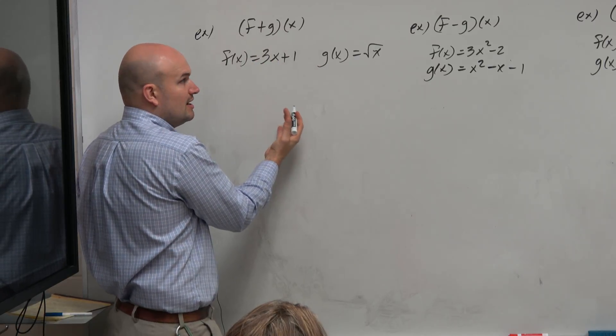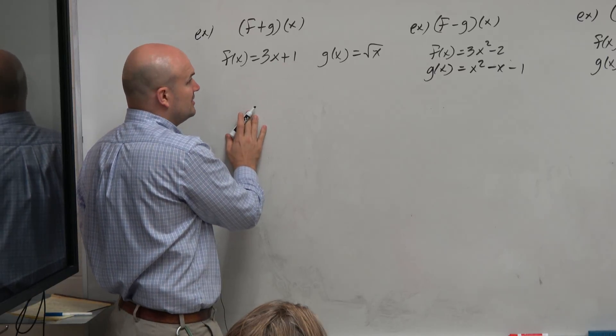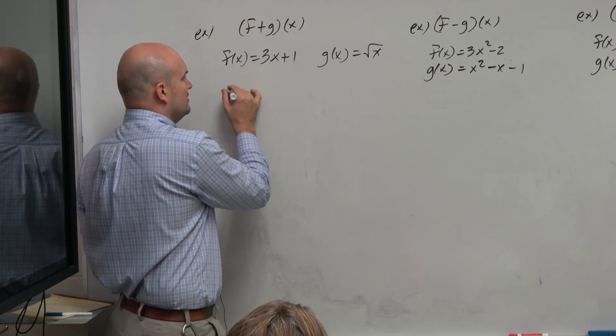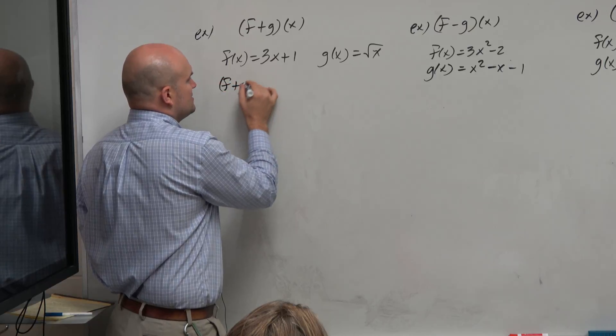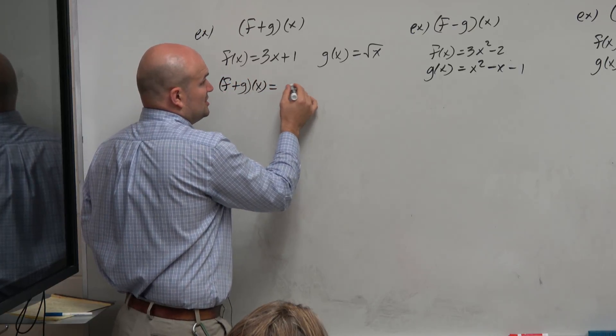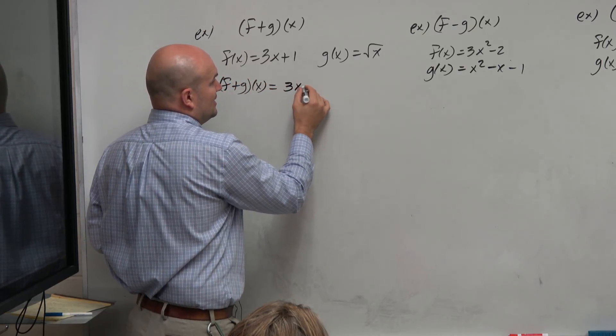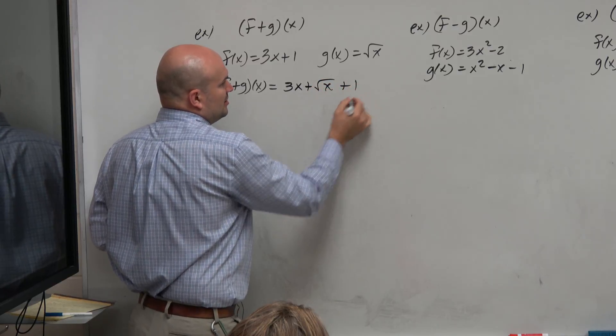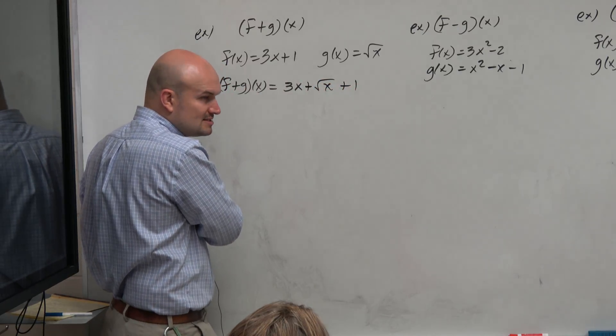Well, if we had like terms, we could go ahead and combine them. In this case, we don't really have any like terms. So therefore, the f plus g of x is simply just 3x plus square root of x plus 1. Doesn't matter what order it is, right?